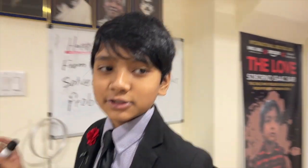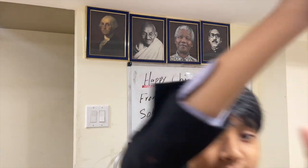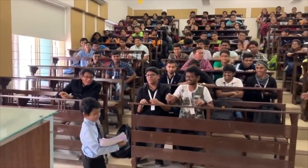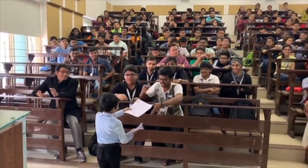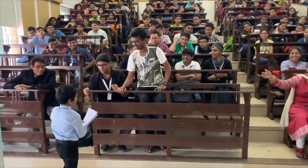Thank you, everybody, for watching. We'll see you in the next circular motion problem. Let's take this tennis ball and slap it. Soborno Isaac Bari, who is known as the god of mathematics, became the youngest professor in the history of mankind.